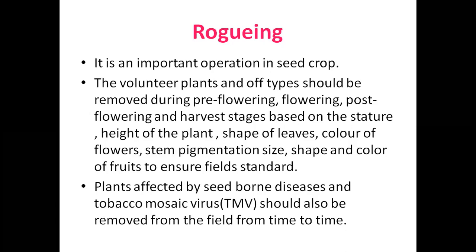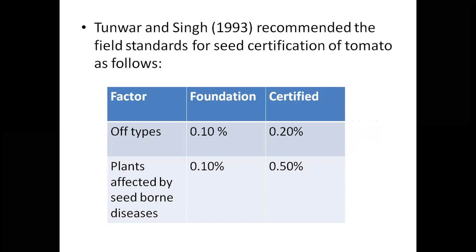Every character must be observed carefully — including pigmentation, height, shape, and color. What is nucleus seed, breeder seed, foundation seed, and certified seed? When a farmer goes to the market and buys seed, which type of seed does he get?